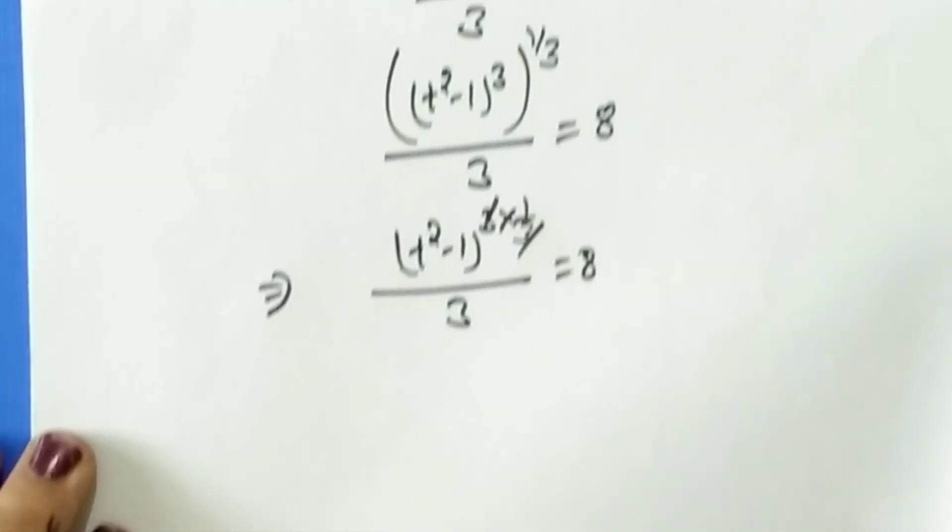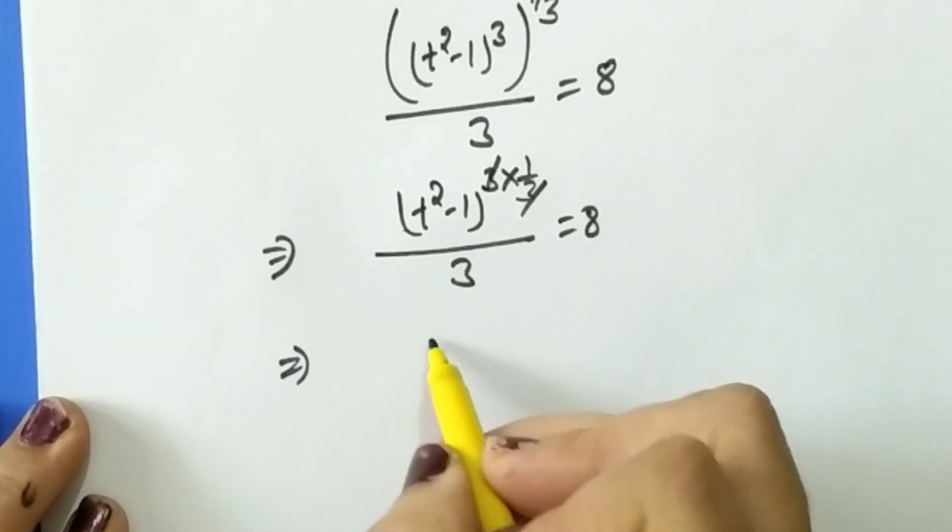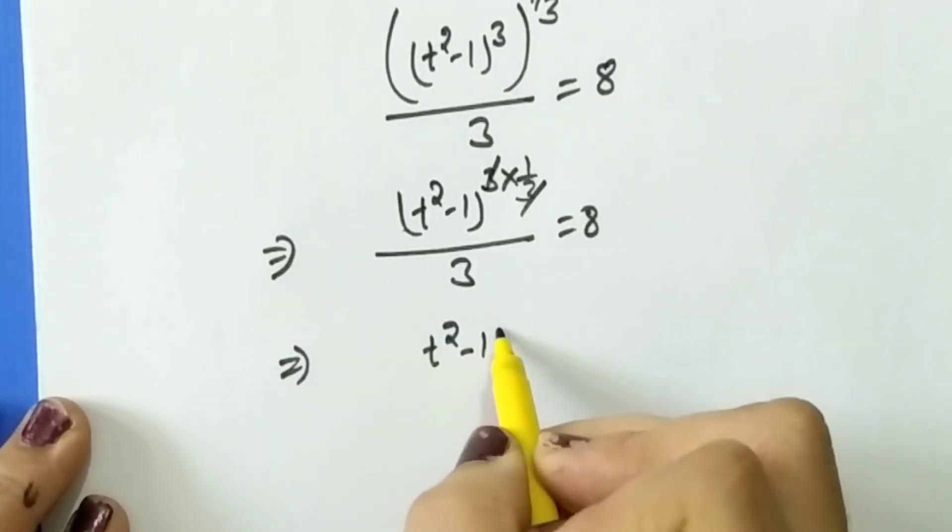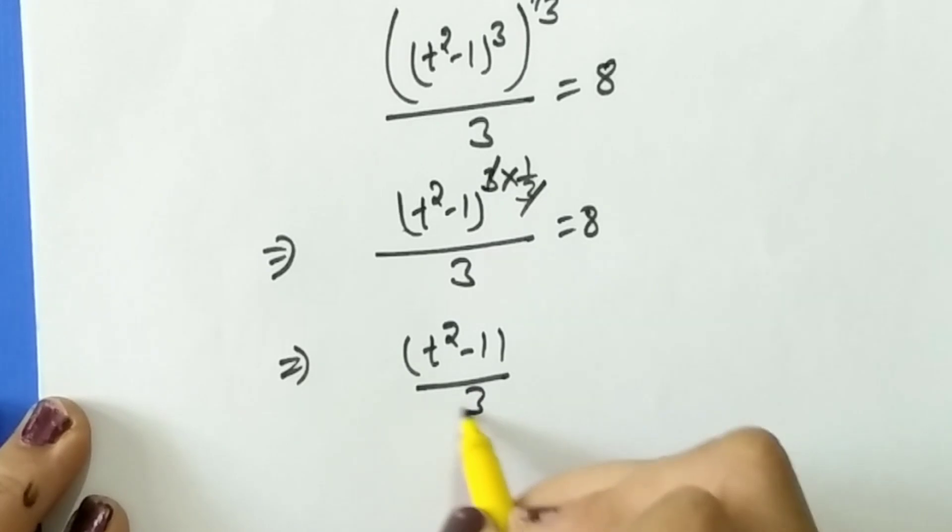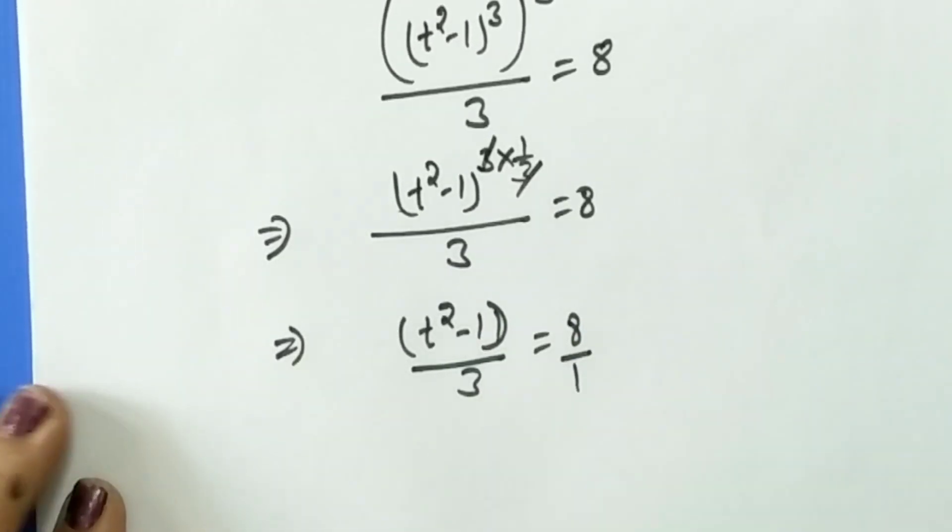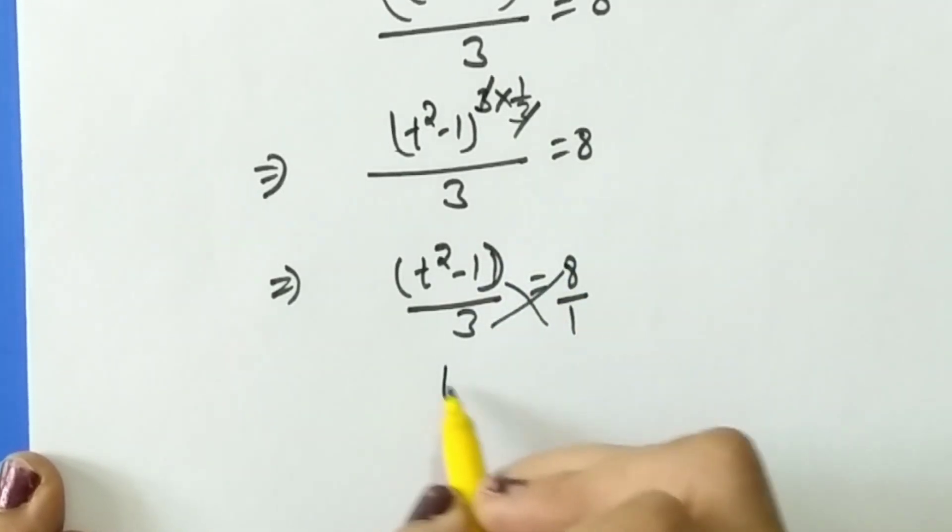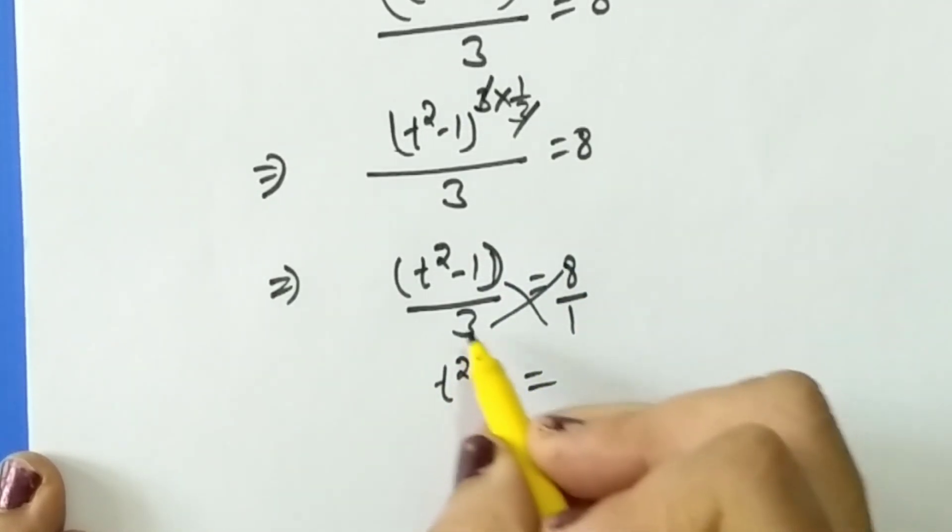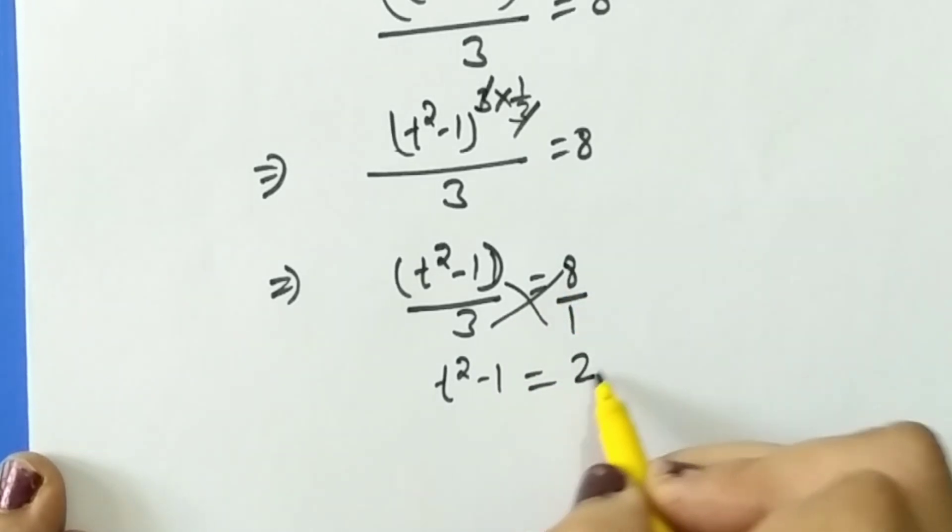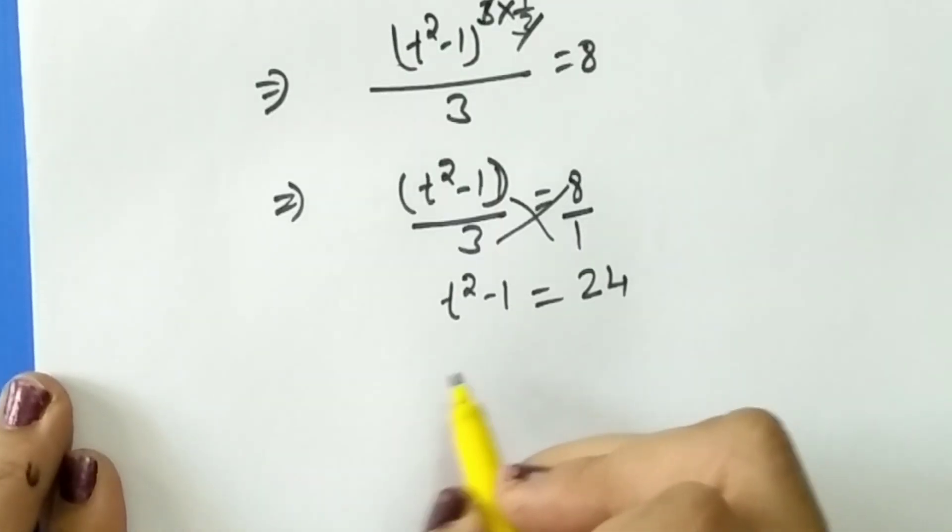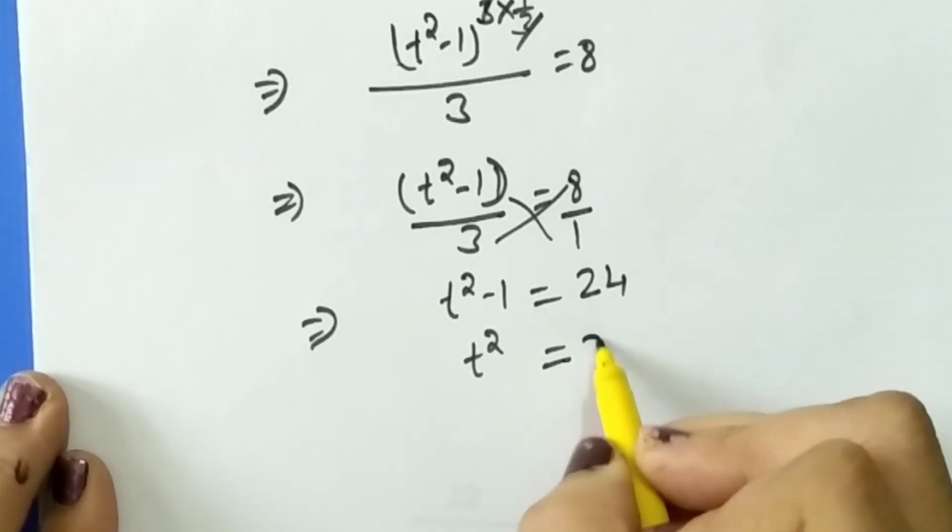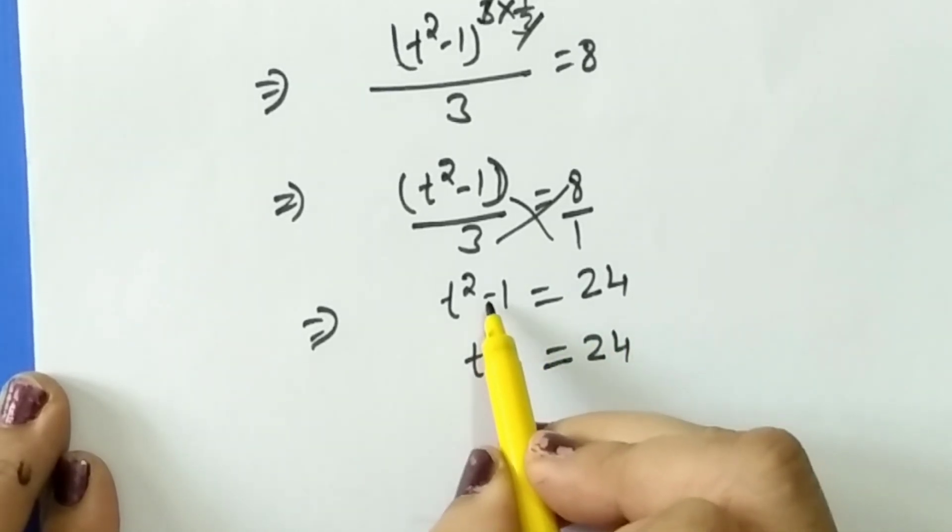Now we cross multiply here: t² - 1 equals 3 times 8, which is 24. Now t² equals 24, and this negative 1 we shift to the right-hand side, so this will be positive 1. Here 24 plus 1 equals 25.